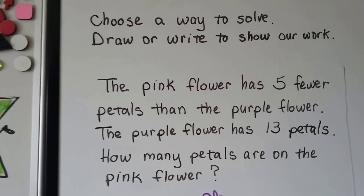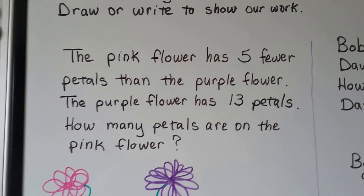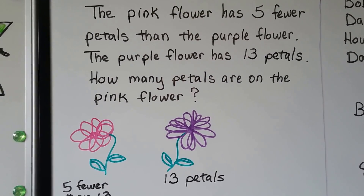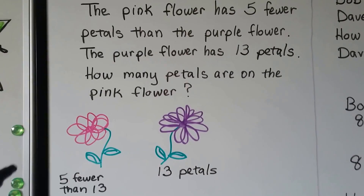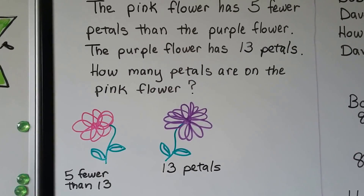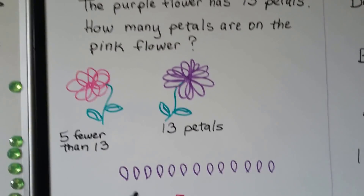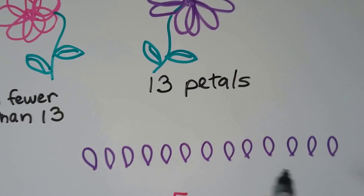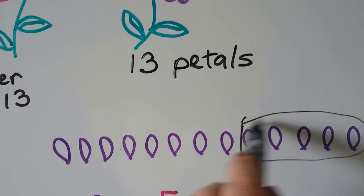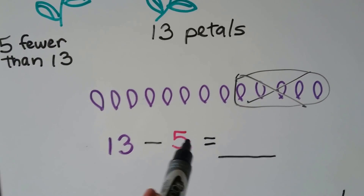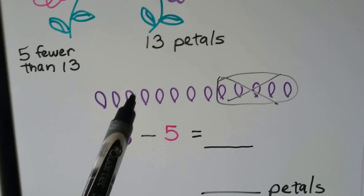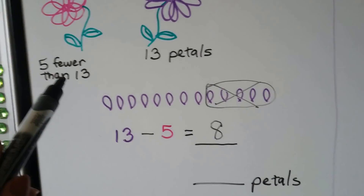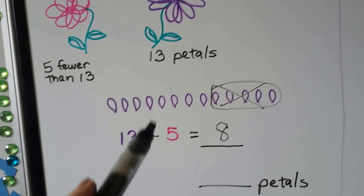Choose a way to solve — draw or write to show our work. The pink flower has 5 fewer petals than the purple flower. The purple flower has 13 petals. How many petals are on the pink flower? We can draw 13 petals, and if the pink one has 5 fewer, we can take 5 away — that is 13 minus 5. We can count how many are left: 1, 2, 3, 4, 5, 6, 7, 8. The pink one must have 8 petals — it has 5 fewer than the purple one.